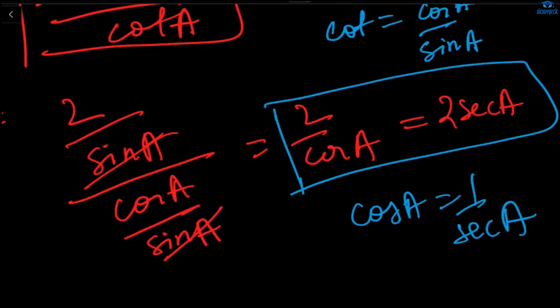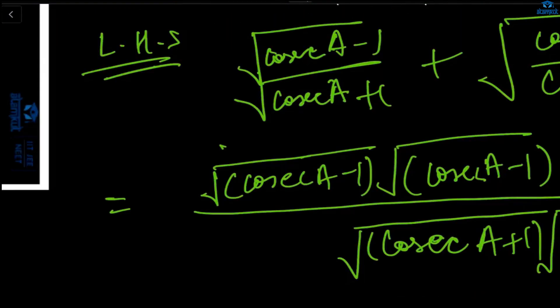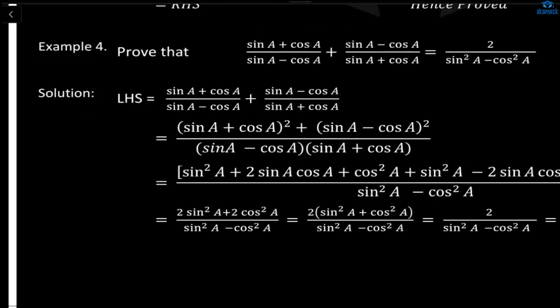For proving trigonometric identities, you must practice a lot of questions. Once you practice, just by looking at the question you'll know which identity to use and what substitution to make. It's not necessary that proof can be done in only one way — different approaches are perfectly acceptable. Trigonometry means practice.